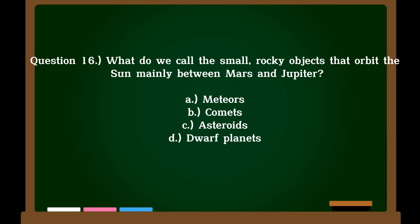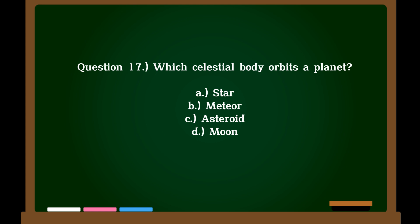Question 16. What do we call the small, rocky objects that orbit the sun mainly between Mars and Jupiter? A. Meteors, B. Comets, C. Asteroids, D. Dwarf planets. Correct answer: C. Asteroids.